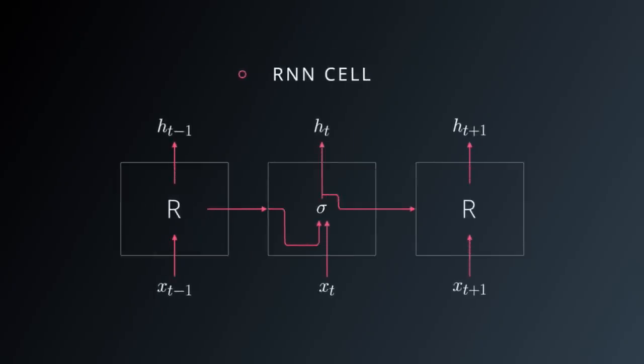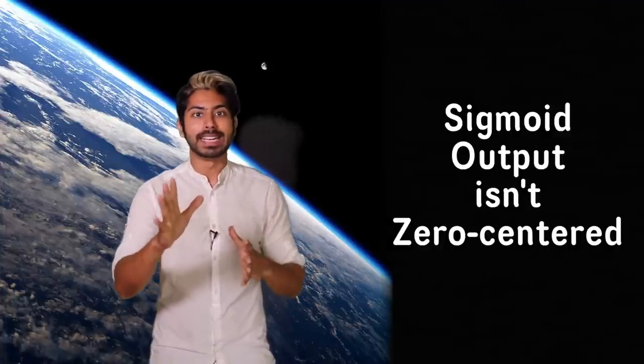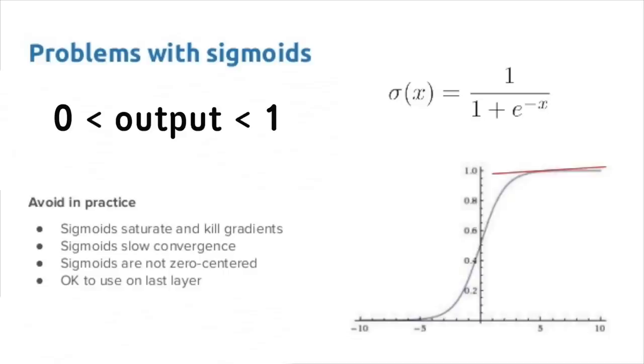The second problem is that its output isn't zero centered - it starts from 0 and ends at 1. That means the value after the function will be positive, and that makes the gradient of the weights become either all positive or all negative. This makes the gradient updates go too far in different directions, which makes optimization harder. I can't control these gradients!